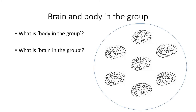Another area to support active listening is 'brain and body in the group,' also linked to Michelle Garcia-Winner. 'Body in the group' means your body is physically in the same space as others — for example, sitting around a table. 'Brain in the group' means your brain is thinking about the topic and what other people are saying; your body may be physically present but your brain might not be. A practical activity is using a class poster with removable brains — all brains inside a circle representing the group — and the teacher can move brains out to indicate when someone's thoughts have left the group, helping children visually see when their thoughts have wandered.